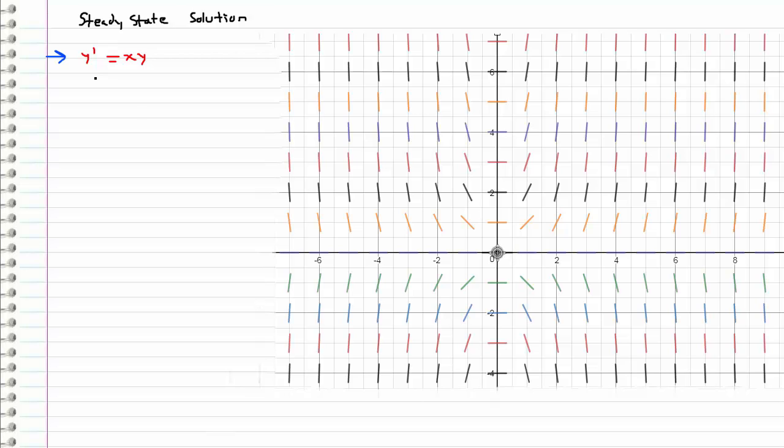In order to find the steady state solution, all you have to do is set y prime equal to 0. The reason we do that is because a steady state solution represents when a function is not changing, when it's steady. And that occurs whenever the derivative, which is also the rate of change of a function, is equal to 0.